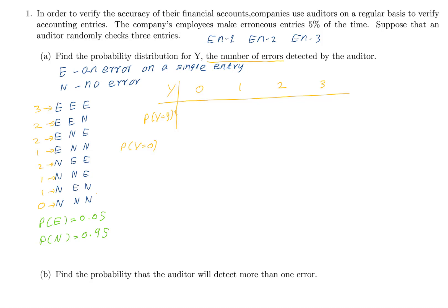With probability of E equal to 0.05, probability of y equals 0 means no error, which corresponds to only the NNN outcome. Since the entries are independent, we write probability of N times probability of N times probability of N, which is 0.95 to the power of 3. Therefore, probability of y equals 0 is 0.8574.